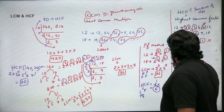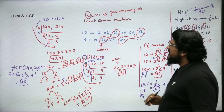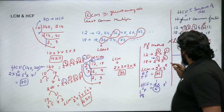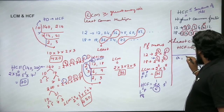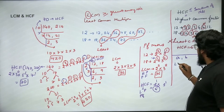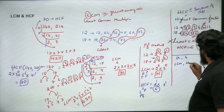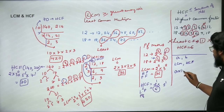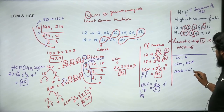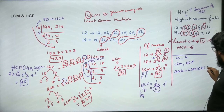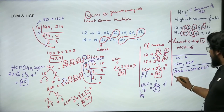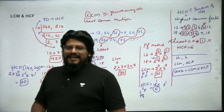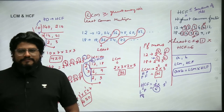There is an important rule: if two numbers are A and B and their LCM and HCF exist, then the product of the two numbers (A × B) is always equal to the product of LCM and HCF. So: A × B = LCM × HCF.